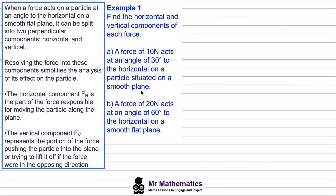The first thing we're going to do is sketch this as a diagram. Because we're told the plane is smooth, this means there's no friction. We have our force of 10 newtons applied at 30 degrees to the horizontal. The blue arrow here is our horizontal component, and the blue arrow pointing upwards is the vertical component, because the green force of 10 newtons is acting in both of these directions.